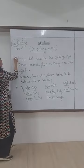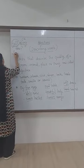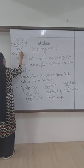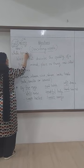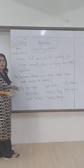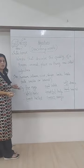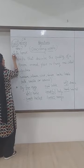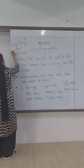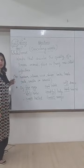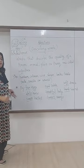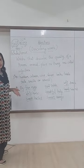Now if we take one more example, let's say 'white horse.' What is the color of the horse? White. How is the horse? It is white in color. So 'white' is also an adjective.